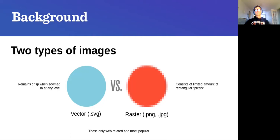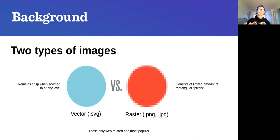SVG stands for Scalable Vector Graphics. If you open an SVG file that isn't compressed, you'll see its structure is very similar to HTML. What is great about vector images is that they remain crisp when you zoom in. Fonts on computers are also designed this way — saved in a vector format, consisting of points, lines, and Bezier curves. When you zoom in, they are always re-rendered at every level, so no matter how much you zoom in, you always have clear lines.